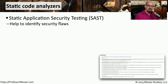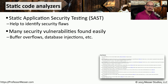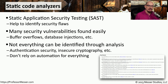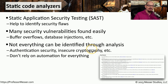Application developers also have a way to check their code for potential vulnerabilities using a static application security testing system. This is software that reviews the source code of an application to determine where potential vulnerabilities might be — it might identify a buffer overflow, a database injection, or other vulnerabilities inside the code itself. Although static code analyzers are quite good at finding vulnerabilities written in the code, there are certain types they may miss, such as authentication security issues or an insecure implementation of cryptography.